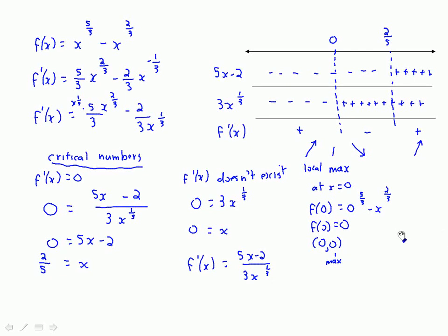We find the minimum value by computing f(2/5). Plugging in 0.4, this is where I would deem it appropriate to round off: 0.4^(5/3) - 0.4^(2/3) gives approximately -0.33. So the minimum is at approximately (0.4, -0.33) — or (2/5, -0.33).